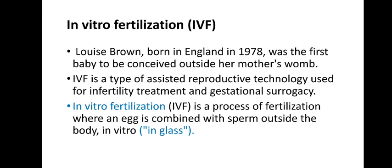Surrogacy is where someone else carries the child for the couple. In vitro fertilization refers to a process of fertilization where an egg is combined with spermatozoa outside the body — in vitro, meaning in a glass petri dish. In vivo fertilization is where fertilization takes place inside the body, while in vitro fertilization takes place outside the body in glass dishes — that is why it is called in vitro fertilization.